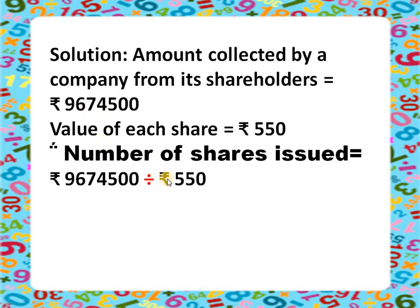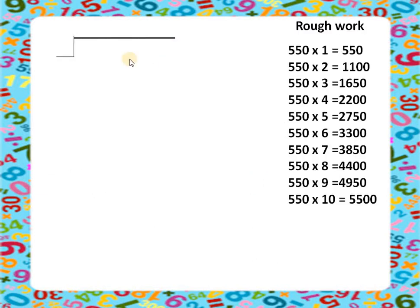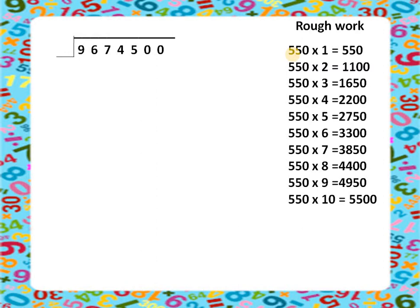We will divide rupees 96 lakhs 74 thousand 500 by rupees 550. Draw the division bracket. I have already informed you about doing rough work on the right-hand side so it is visible — you will also do it like this. The dividend is 9674500 and the divisor is 550. We are going to find all the multiples of 550 first.